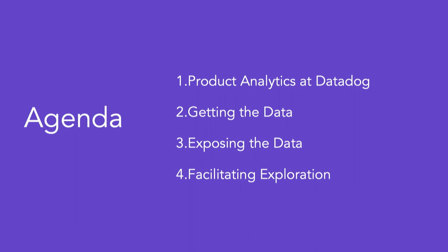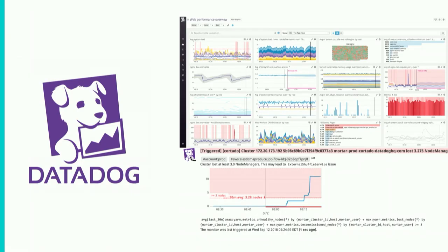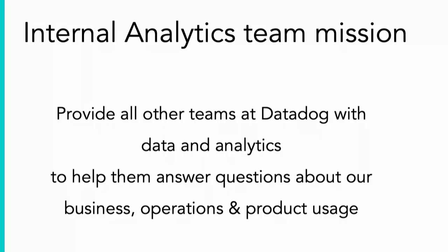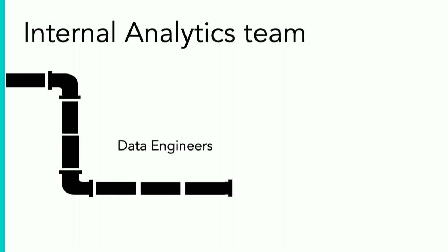For those of you who don't know what Datadog is, it's a SaaS platform for monitoring application performance, logs, and infrastructure metrics. You can also set up alerts to get a notification in your email or through a Slack channel if a metric crosses a certain threshold. Within Datadog we have an internal analytics team that provides data to other teams so they can answer questions about the business. The team has two halves: data engineers who collect, clean, and load data into Redshift, and data analysts who get to play with that data and apply it to business use cases.